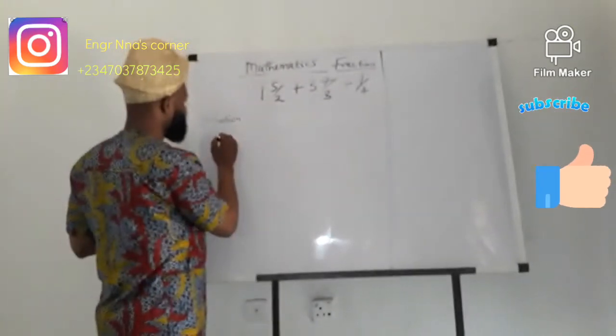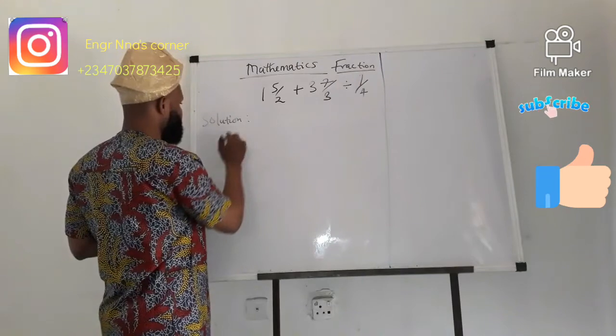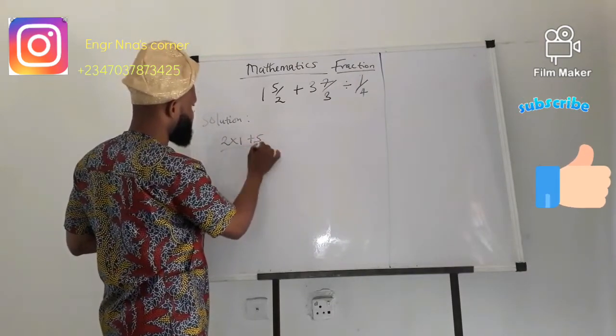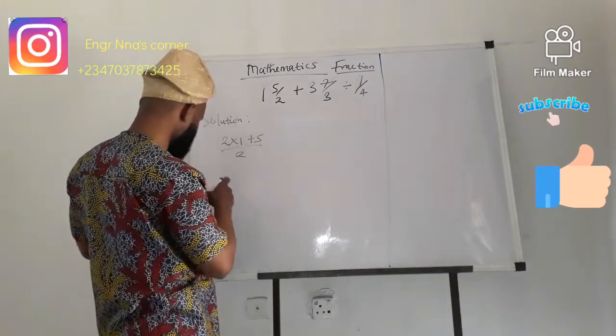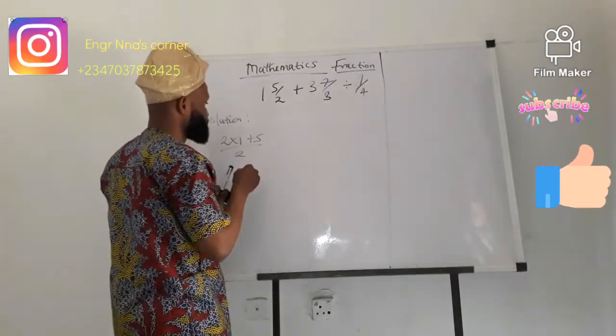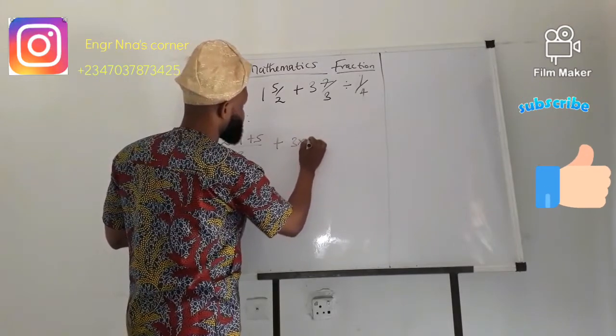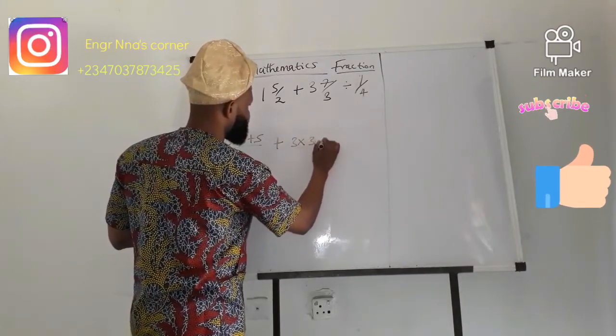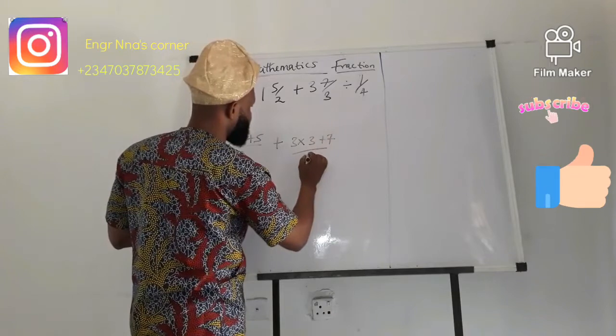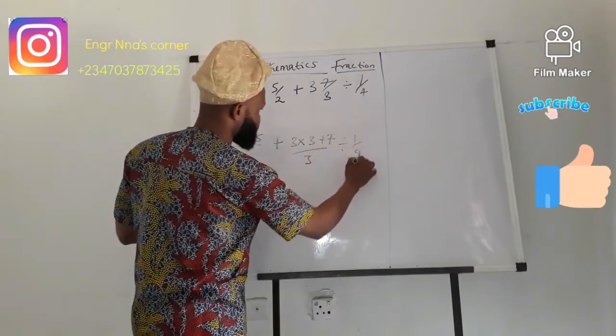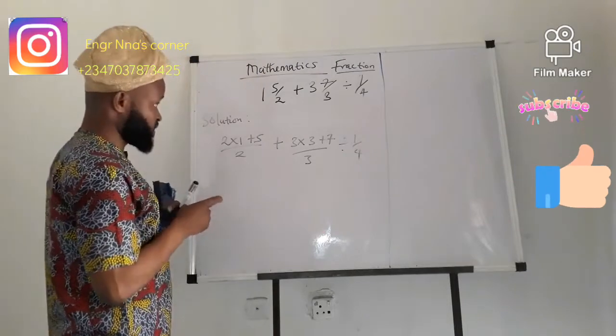And solving this you say 2 times 1 plus 5 over 2 plus 3 times 3 plus 7 over 3 divided by 1 over 4. So this is the equation.